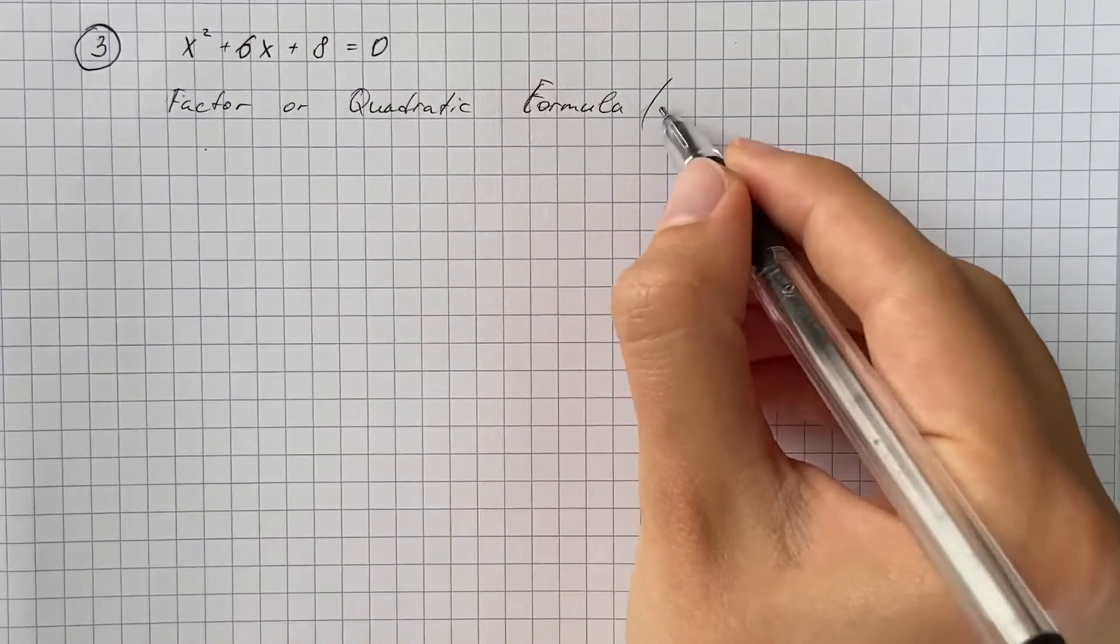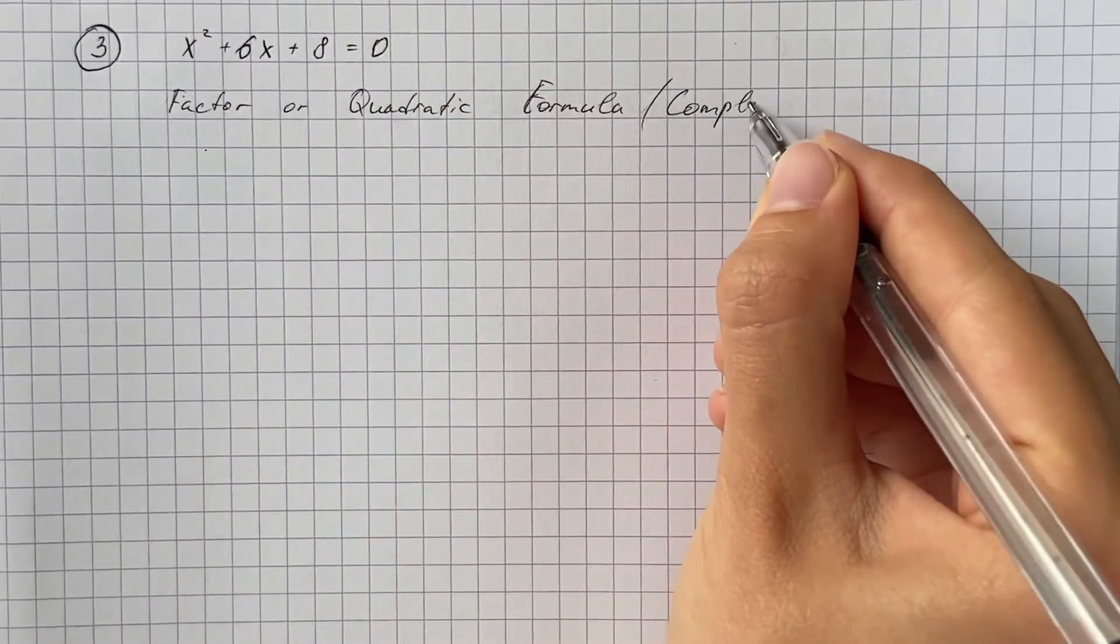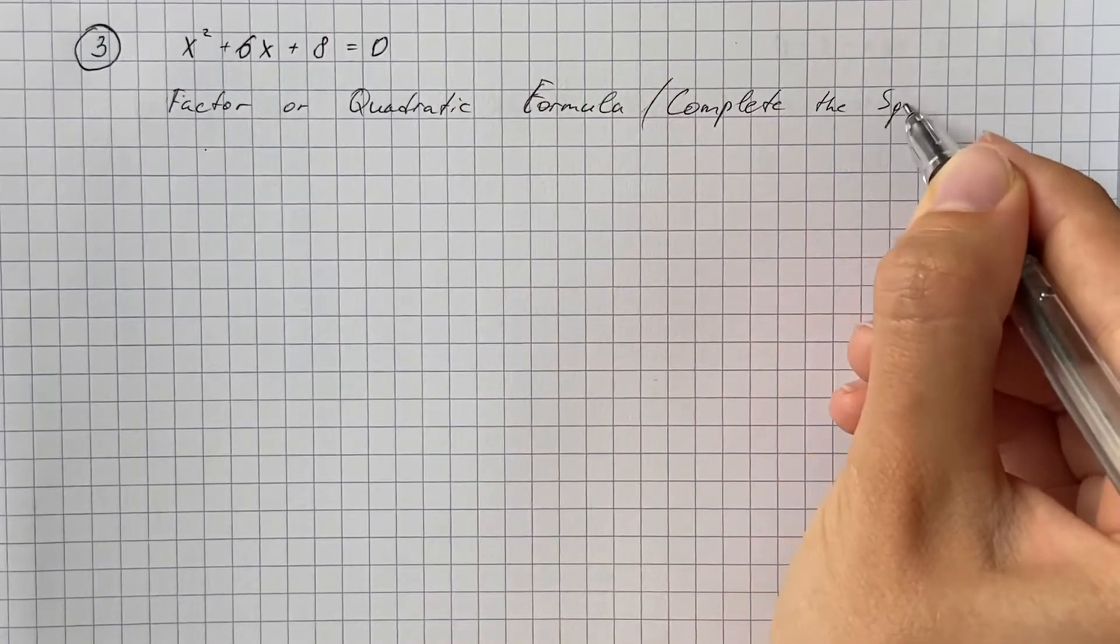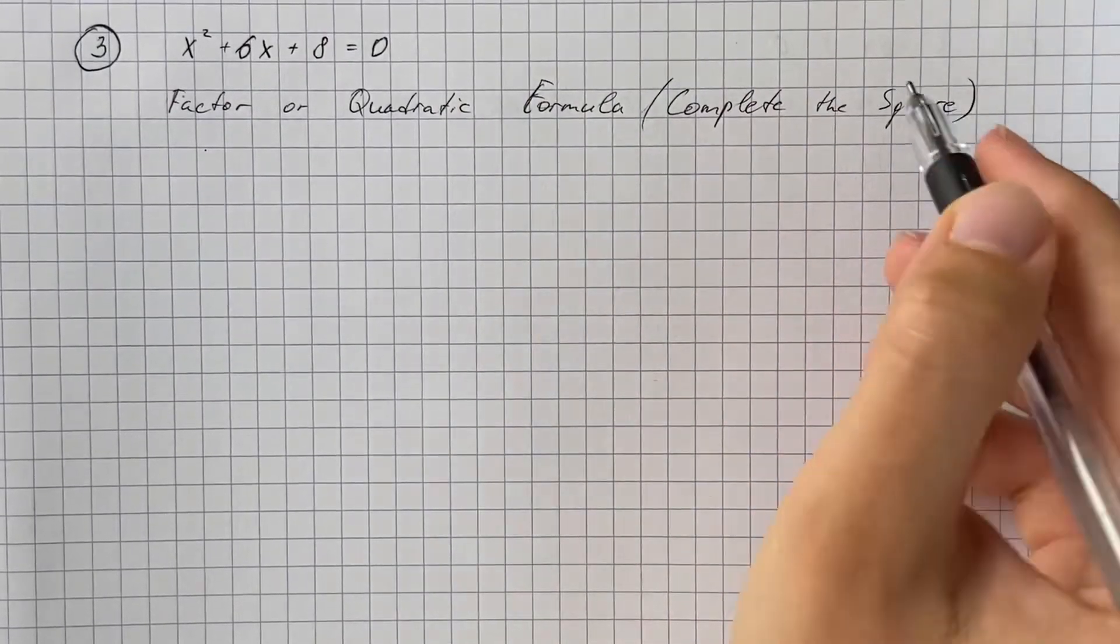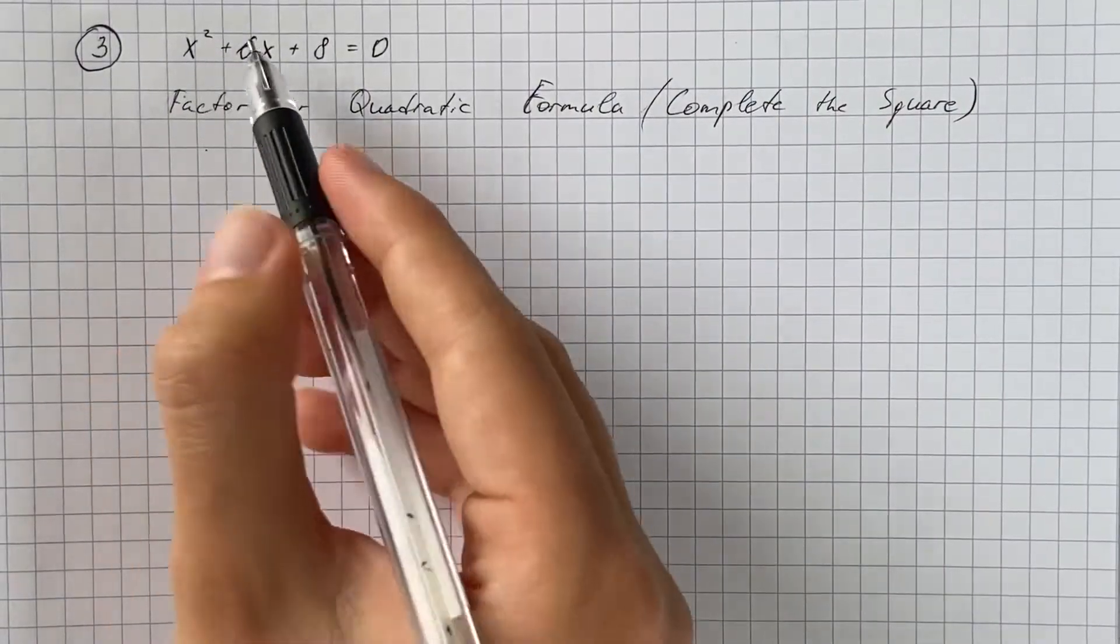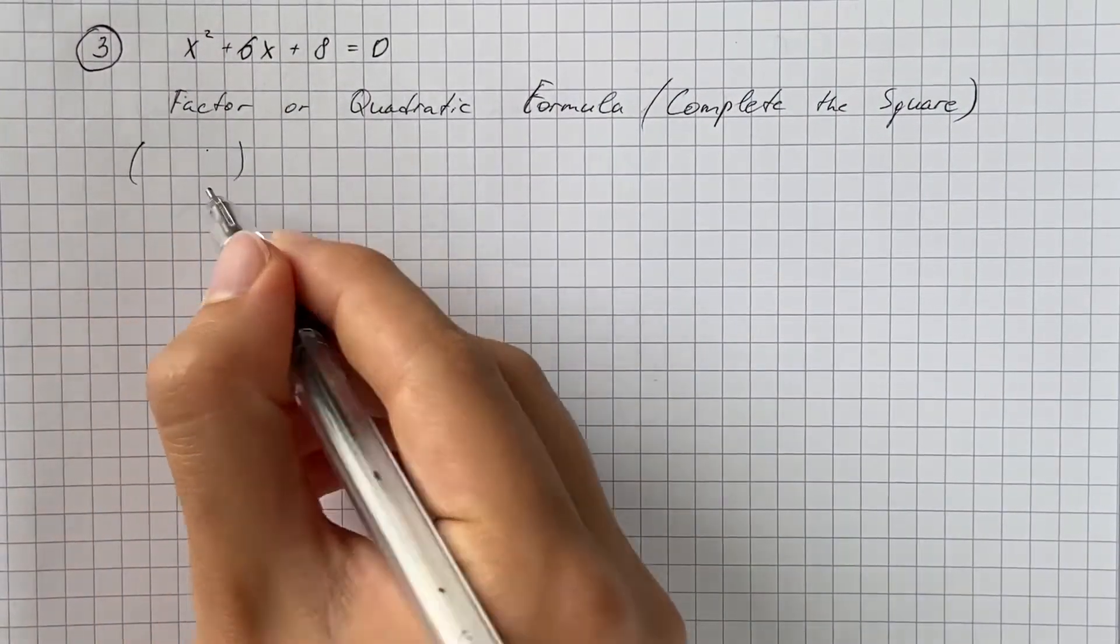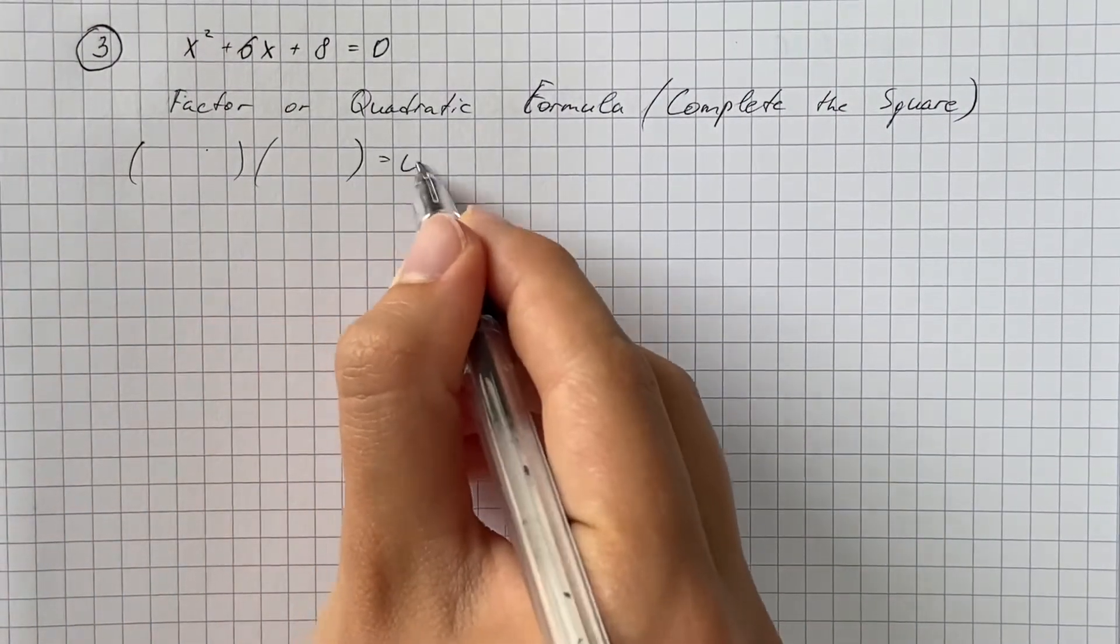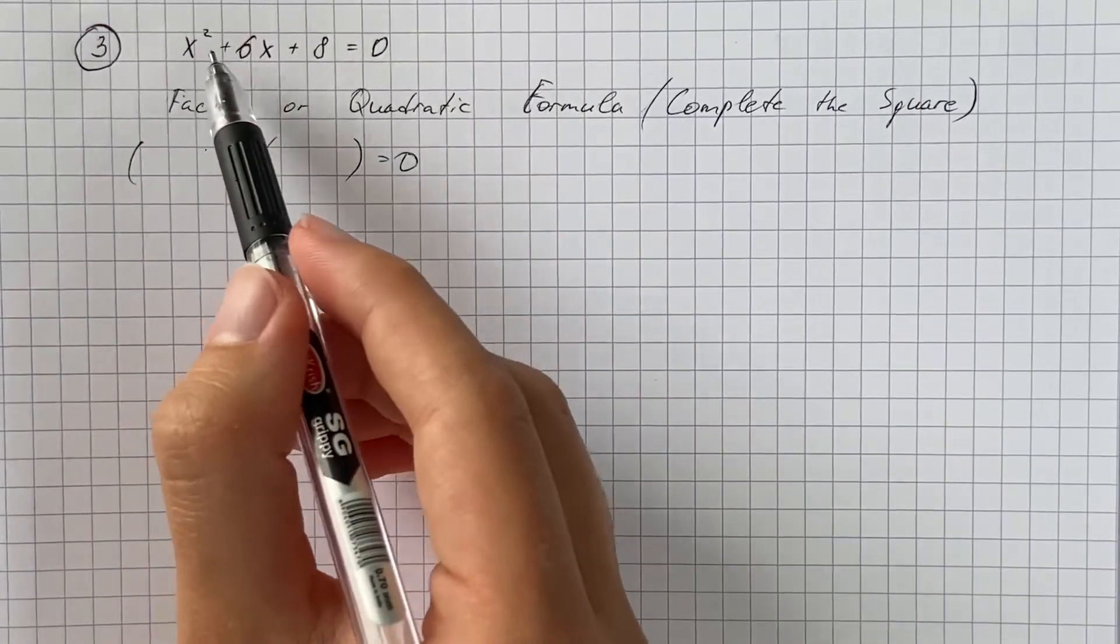But in our case, the easiest way is to factor. So if the coefficient on x squared is just positive one, we get just x in our factors.